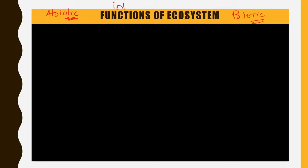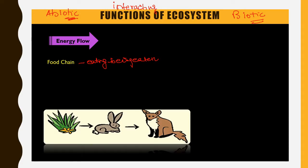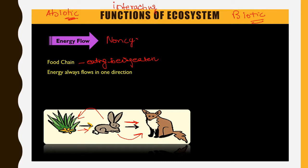These two factors are continuously interacting with each other, and these interactions take place in two forms. The first form is energy flow. Energy flows through a food chain, and a food chain is a sequence of eating and being eaten. For example, a rabbit eats a plant and a rabbit is eaten by a fox. If you look at the arrows, energy is flowing in one direction — from plants to rabbit and from rabbit to fox. So energy flow is unidirectional and non-cyclic in nature. Energy cannot flow in the opposite direction.